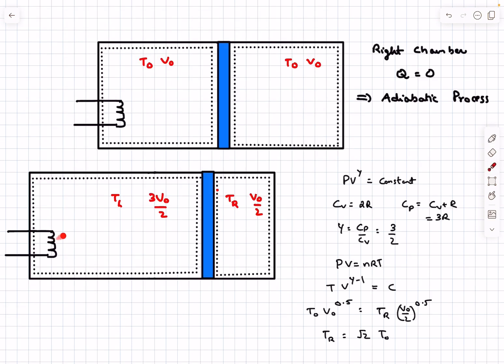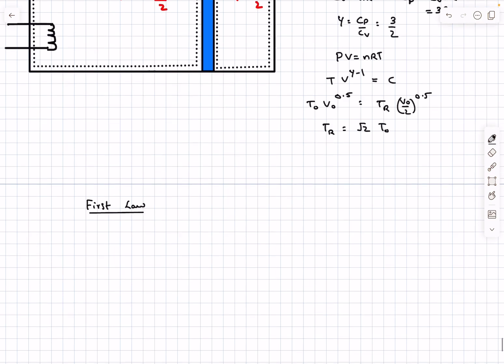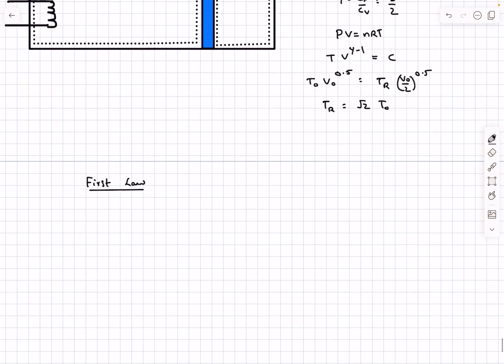Now we have to determine the heat transfer Q into our left chamber. As we have to find the heat transfer we're going to use the first law of thermodynamics, which says that Q = ΔU + W. The heat transfer into our system equals the change in internal energy plus the work done on the boundaries.